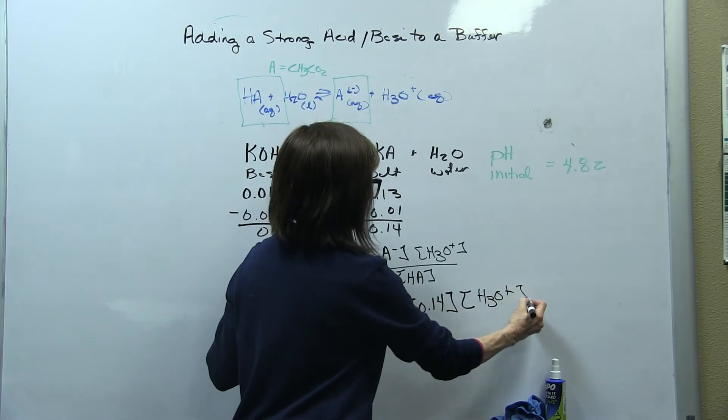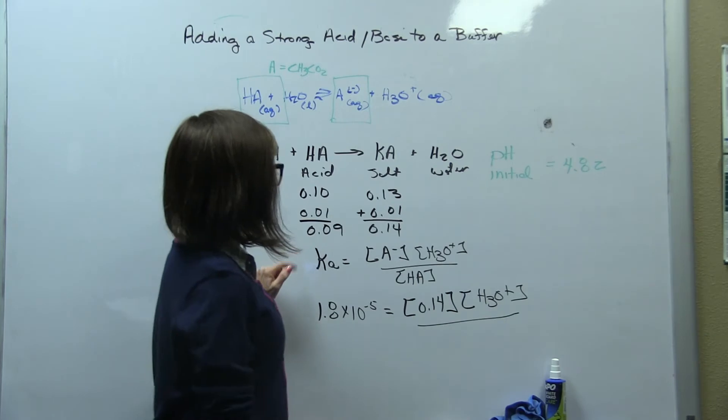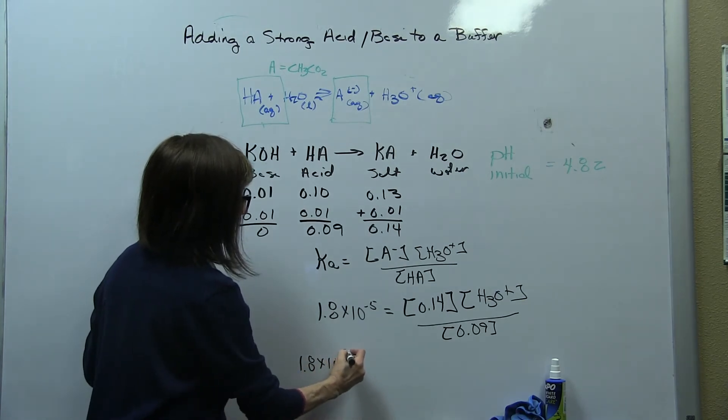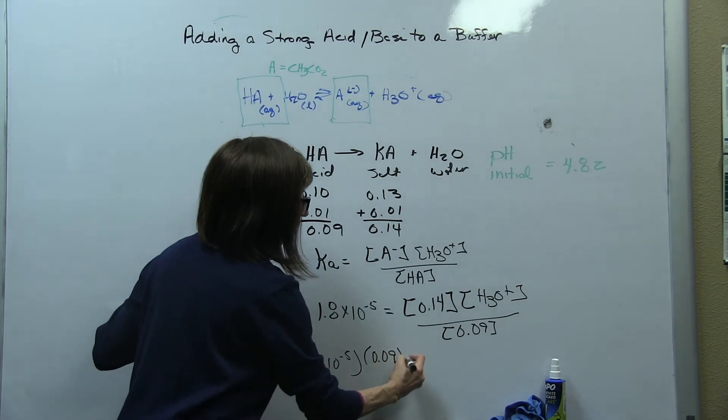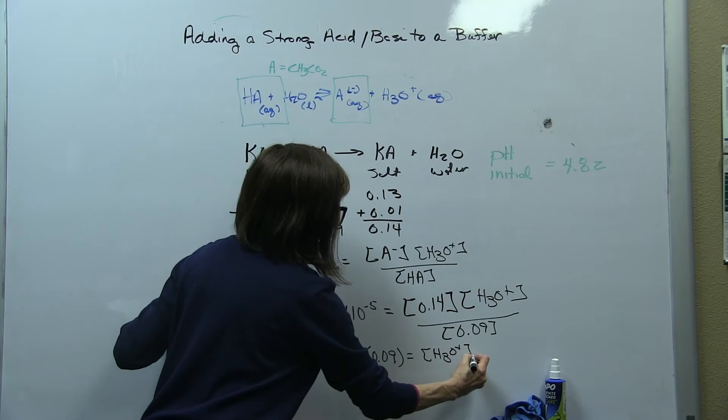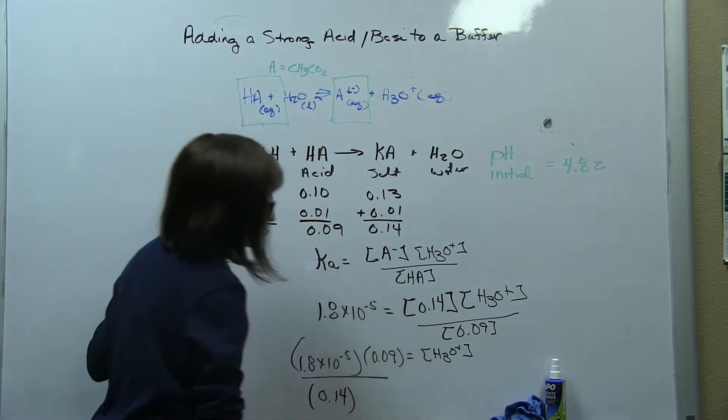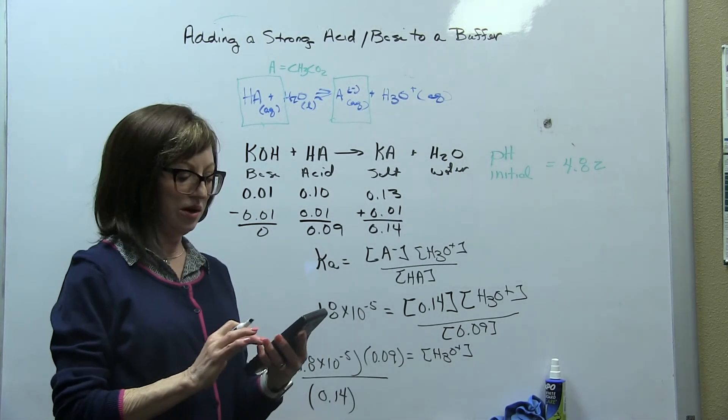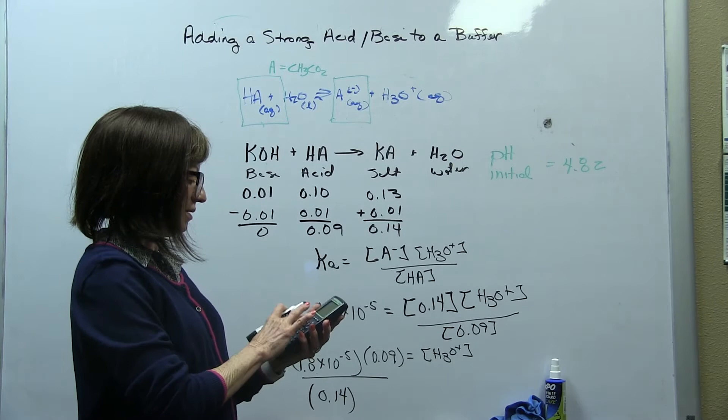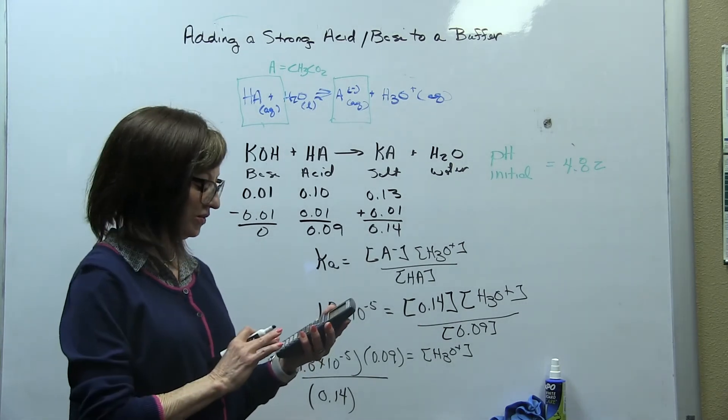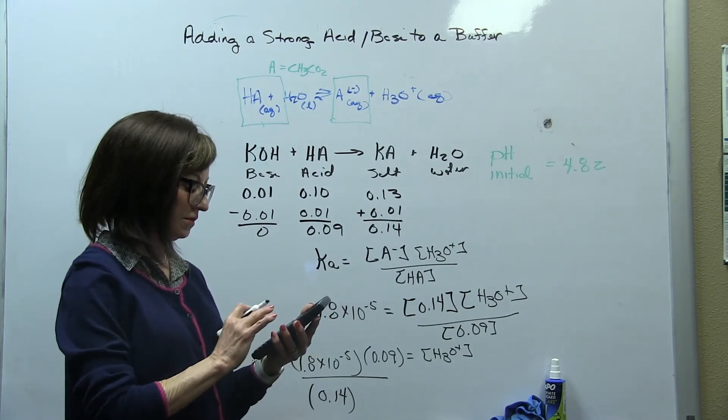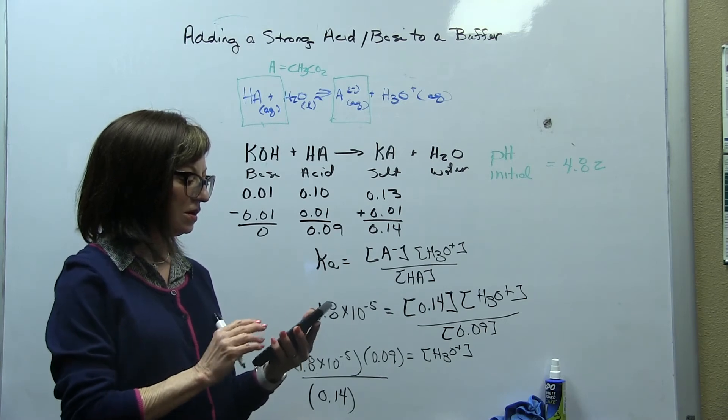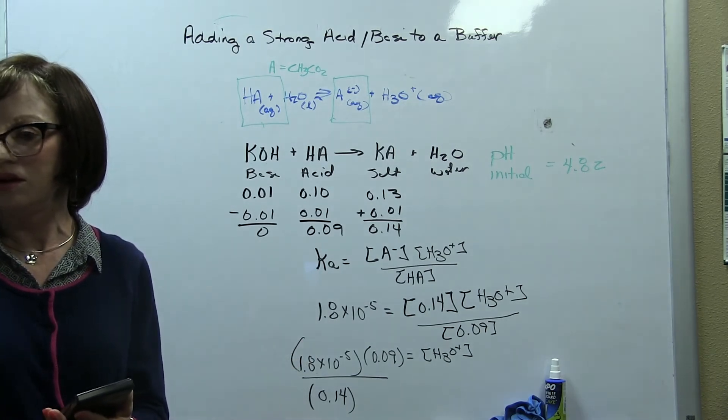So we have Ka equal to A minus H3O plus all over HA, and here's our values, 1.8 times 10 to the negative 5 is equal to our Ka now is 0.1 potassium acetate, which this is acetate here. If we're in one liter, remember these concentrations are in molarity, moles per liter. So that's why we can directly put these moles in. If we were in two liters, we'd have to divide by two. For our acid, we have 0.09. We have 1.8 times 10 to the negative 5 times 0.09 is equal to hydronium ion divided by 0.14. Let's see what we get for that answer. Can't leave home without it.